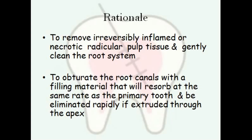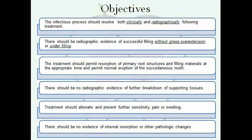The rationale behind pulpectomy is to remove the irreversibly inflamed and necrotic radicular pulp tissue and gently clean the root system. It is also done to obturate the root canals with a filling material that will resorb at the same rate as the primary tooth and be eliminated rapidly if extruded through the apex. The goals include resolution of the infectious process both clinically and radiographically, radiographic evidence of a successful filling without over-extension or underfilling, permitting resorption of primary root structures and filling materials at the appropriate time, normal eruption of the succedaneous tooth, no radiographic evidence of further breakdown of supporting tissues, no sensitivity, pain or swelling, and no evidence of internal resorption or pathological changes.